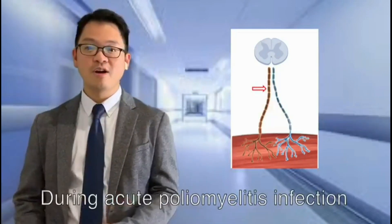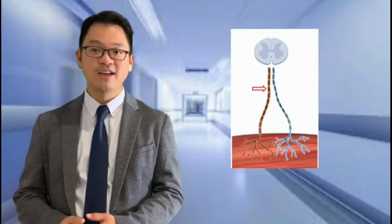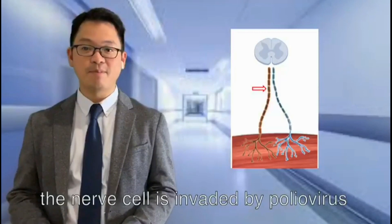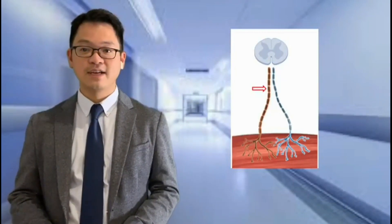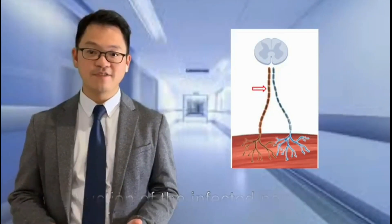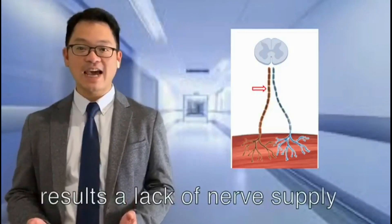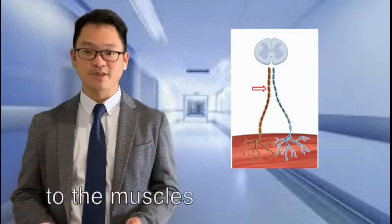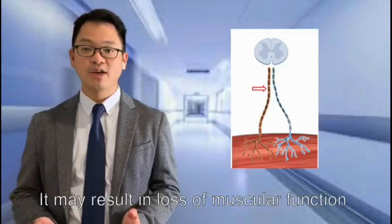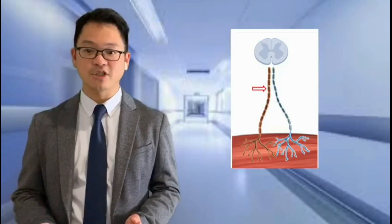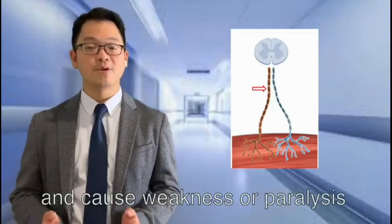During the acute poliomyelitis infection, the nerve cell is invaded by poliovirus. Destruction of infected nerve cells results in a lack of nerve supply to the muscles, and it may result in loss of muscular function and cause weakness or paralysis.